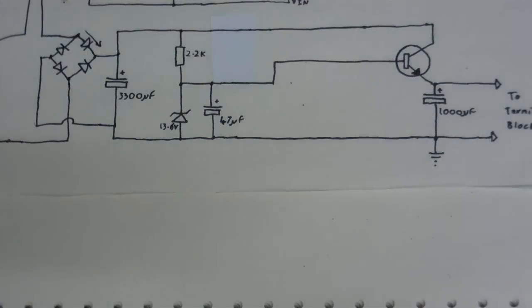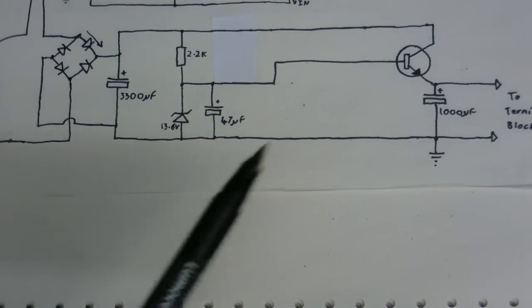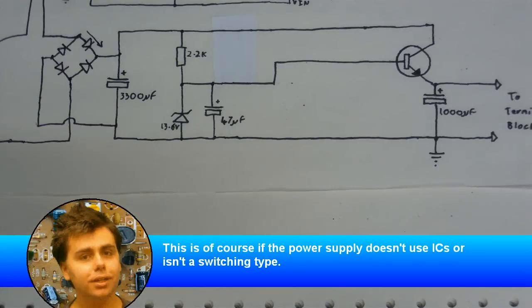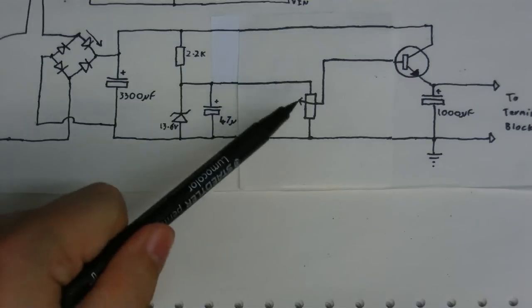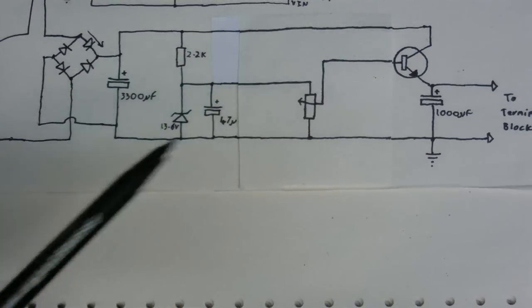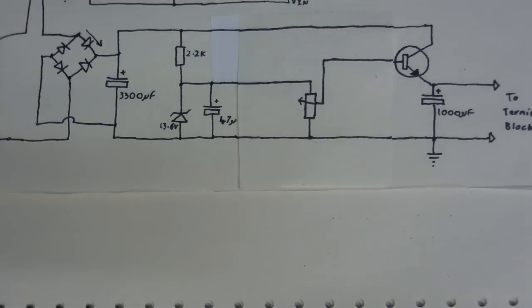Now if you open up any regulated power supply, this is basically what you'll find inside. Some of them have a little bit more than that, some of them have a bit less, but this is the fundamental things that you'll find in a regulated power supply. Now in my power supply, I obviously want to control the voltage. So I've put a potentiometer here between the diode and the transistor, and I can control the voltage it gives out.